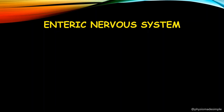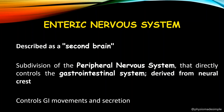The term 'enteric' refers to something related to the digestive system. These enteric nerves are a subdivision of the peripheral nervous system — specifically the peripheral nerves that directly control the gastrointestinal system. They are also described as the 'second brain' because they form a brain-like network of nerves.